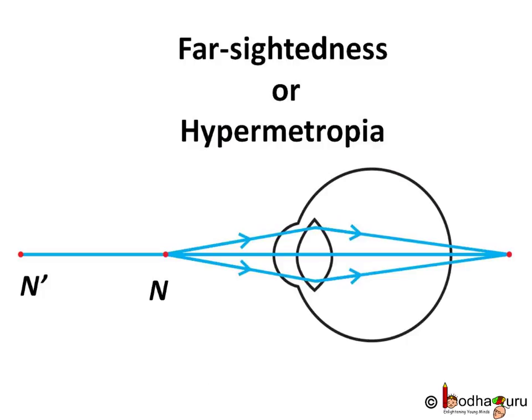In farsightedness or hypermetropia, the image is formed behind the retina instead of on the retina. And this is because the light rays from a nearby object are focused at a point behind the retina. So we can say the near point for the person is farther away from the normal near point which is 25 cm. This means the image is formed beyond 25 cm.